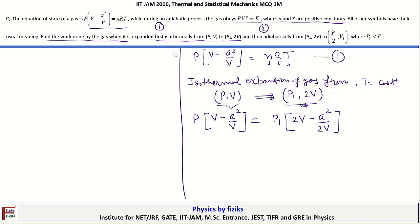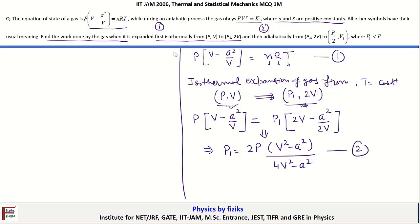After rearranging the terms in this equation, we obtain P₁ = 2P(V² - A²) / (4V² - A²). We call this equation 2. Now we want to evaluate the work done during this isothermal expansion step.